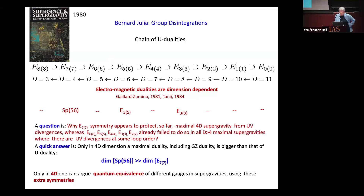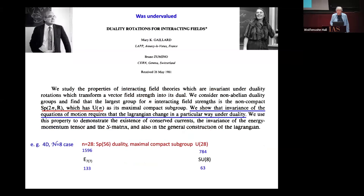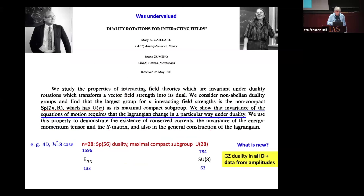Therefore, only in 4D can one argue quantum equivalence of different gauges in supergravity using this symmetry implemented in the Hamiltonian path integral — because it is symplectic, and clearly the Hamiltonian loves symplectic symmetries. Here is Gaillard-Zumino and their story. In the abstract they talk about SP2N, but somehow it was not given enough attention.